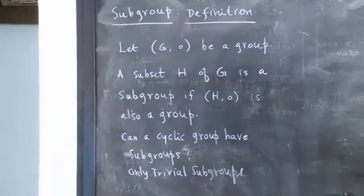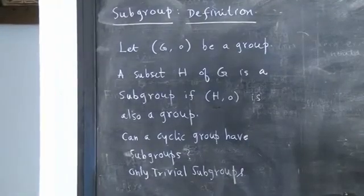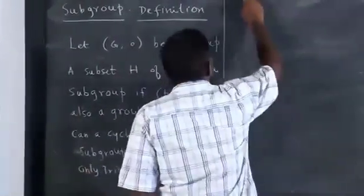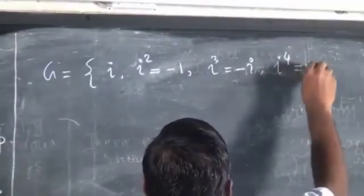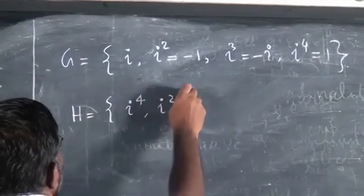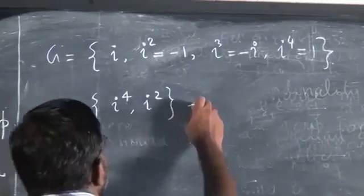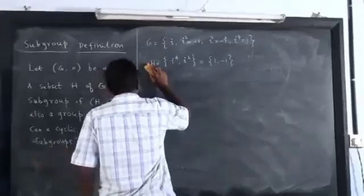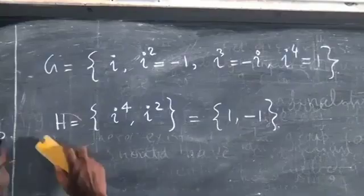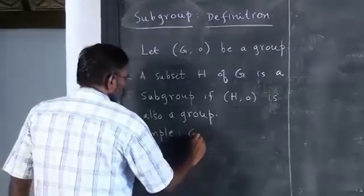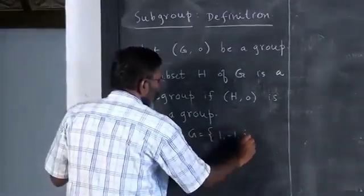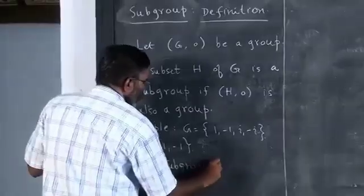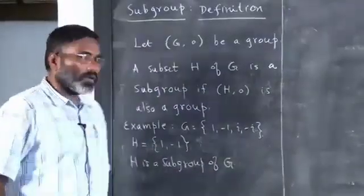Let us look at an example. Consider G = {1, −1, i, −i} and H = {1, −1}. Here H is a subgroup of G. This is also a counter-example to the previous claim, since the group G = {1, −1, i, −i} is not cyclic without proper consideration, and H = {1, −1} satisfies closure: (−1)² = 1, so it forms a group under multiplication.